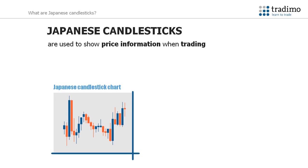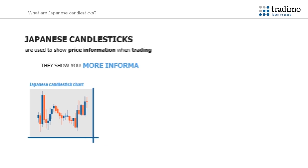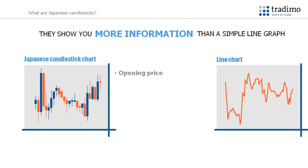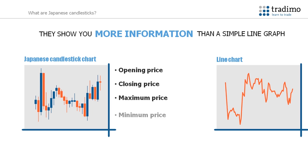Japanese candlesticks are used to show price information when trading. A Japanese candlestick gives you more information than a simple line graph. Where the line graph just gives closing prices, the Japanese candlestick will also give you the opening price, the closing price, the maximum price, and the minimum price during a certain period of time.